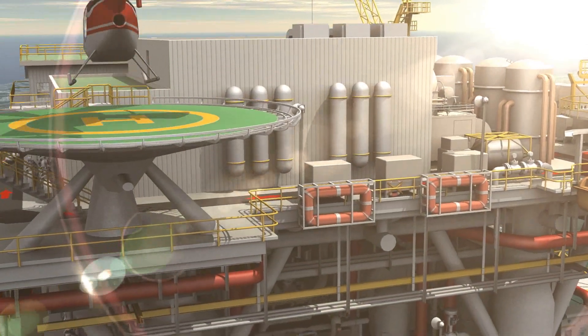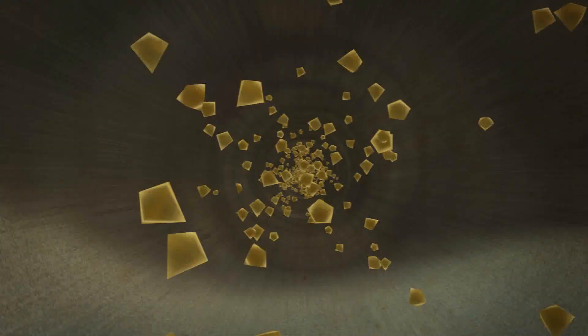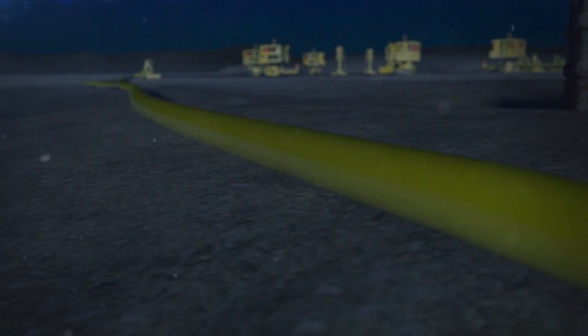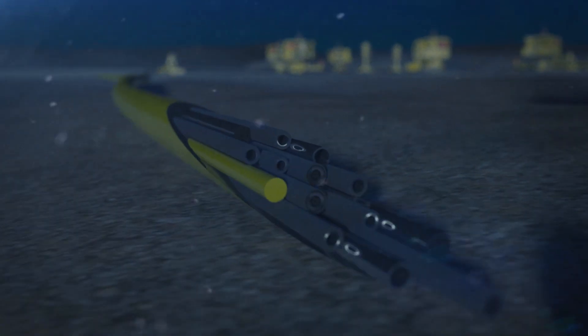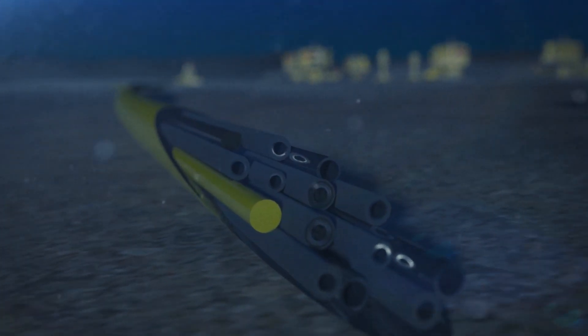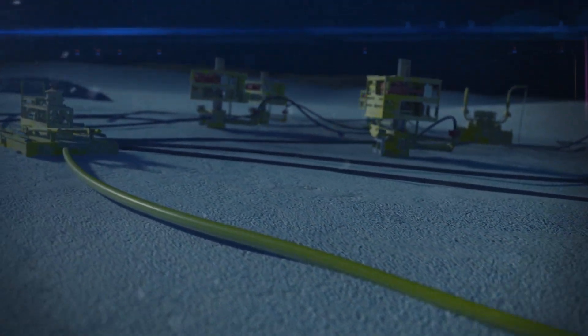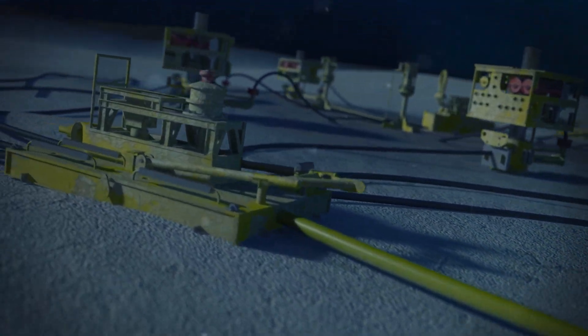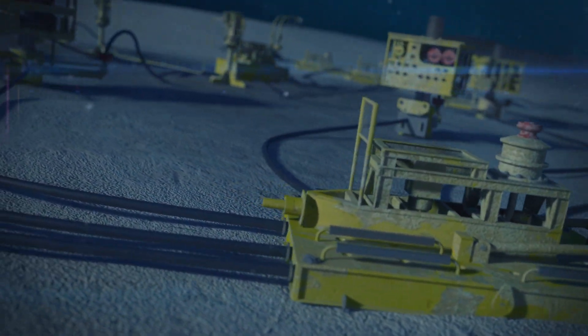The chemical treatment is typically delivered from the FPSO or platform through a tube in the umbilical bundle. The umbilical links the host facility to the producing wells via a subsea umbilical termination assembly or SUTA. Jumpers then carry the chemicals to the individual wellheads or to injection systems that carry the chemicals to various points within the wellbore.